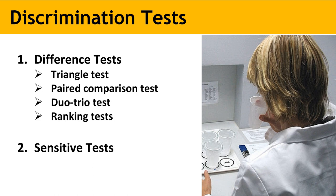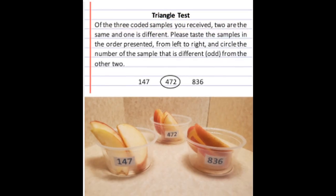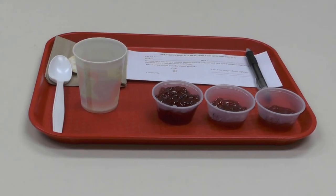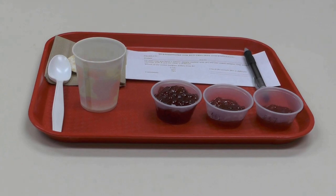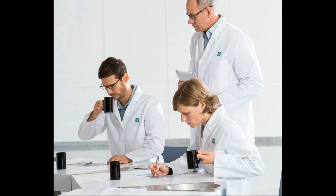Tests of this type are especially useful in selecting and training judges, in product development, and in quality control. They are relatively easy for the judges as they require only a short memory of food quality. One disadvantage of some of these methods is that only two samples are compared at a time. Thus, it may be necessary to pair every sample in a series with every other sample.